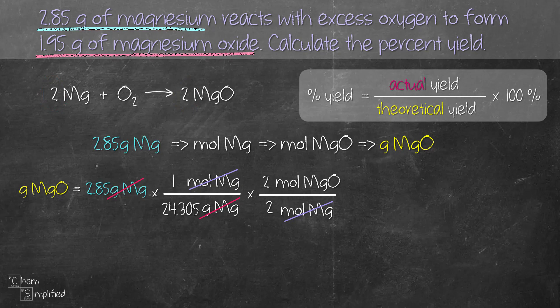The final step is to convert from moles of MgO to grams of MgO. We place moles of MgO at the bottom so it cancels out, and grams of MgO on top. We need the molar mass. We look up the periodic table and add up the atomic masses for Mg and O, which comes out to 40.304 grams per mole. If we do the math: 2.85 ÷ 24.305 × 2 ÷ 2 × 40.304, we get 2.36 grams of MgO.